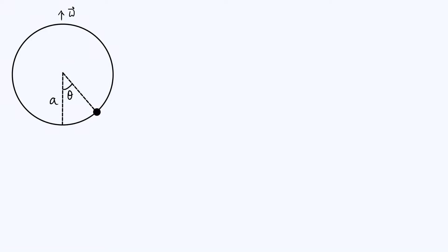Hello everyone! Today we're going to take a look at an interesting dynamical system consisting of a hoop which is rotating about its diameter, and constrained to move along the edge of that hoop we have a little bead, and the bead is moving without friction. What we would like to do is find the equilibrium positions of that bead along the edge of the rotating hoop, and once we've found those equilibria we're going to use our physical intuition to think about the stability of those various equilibria.